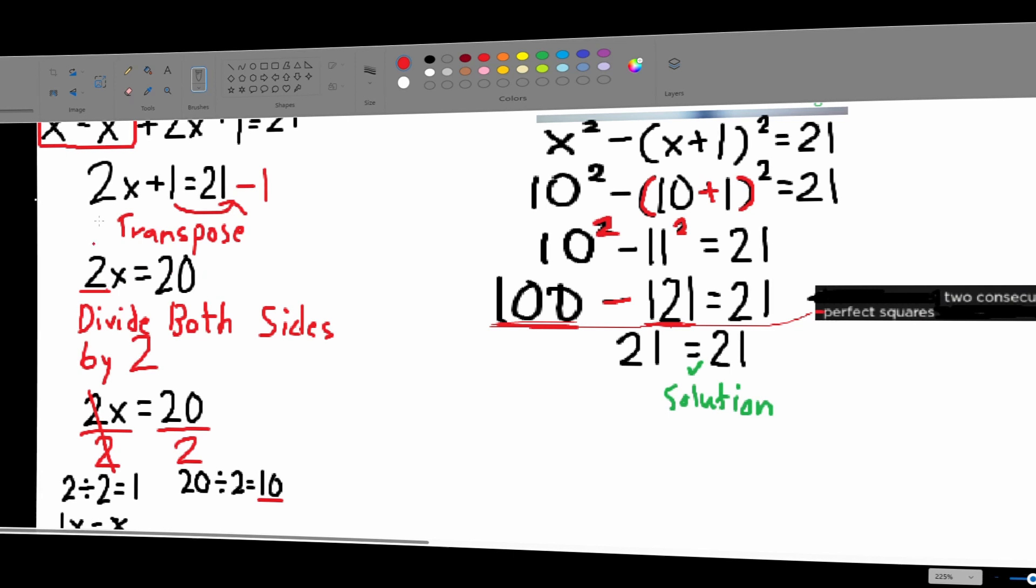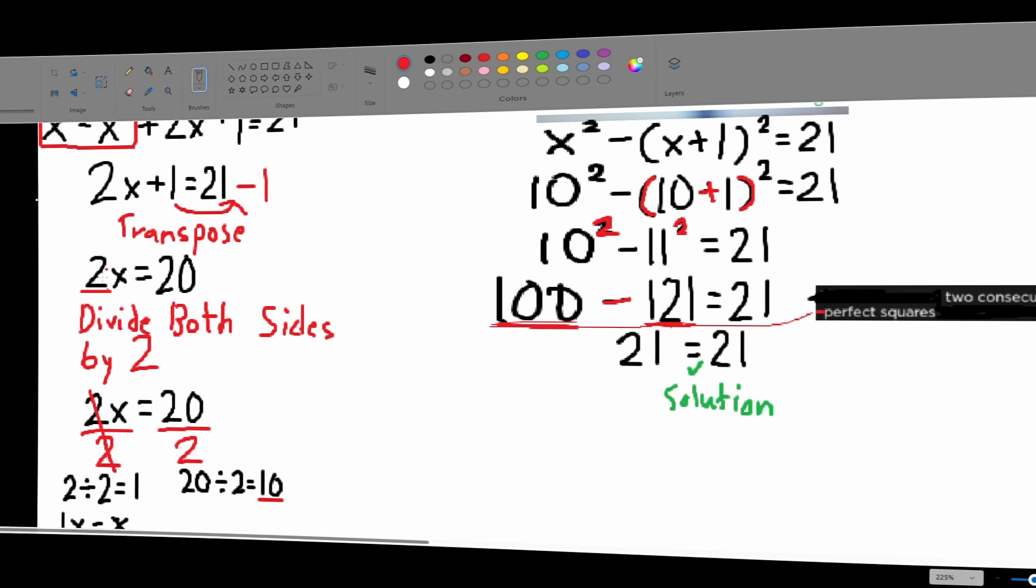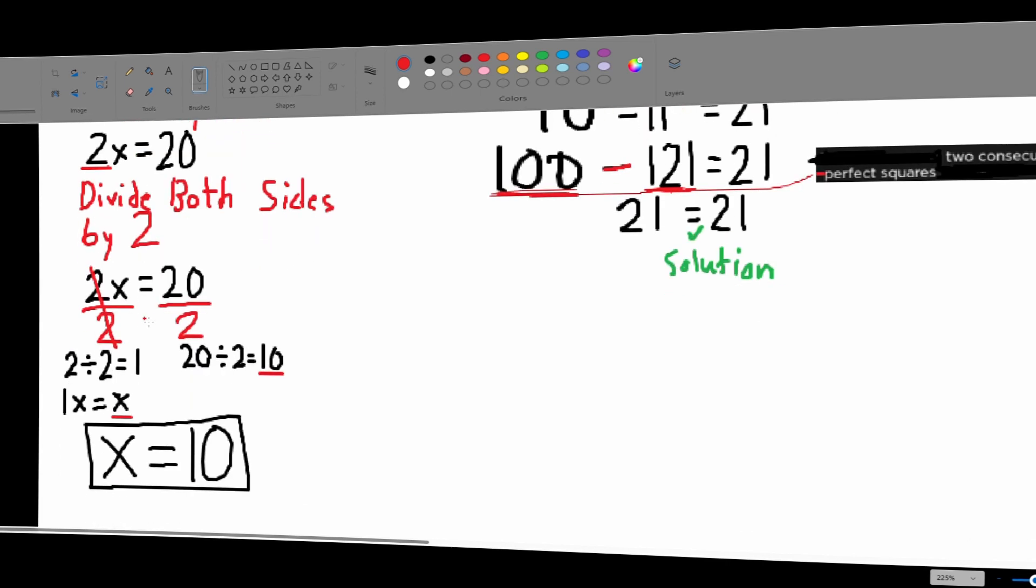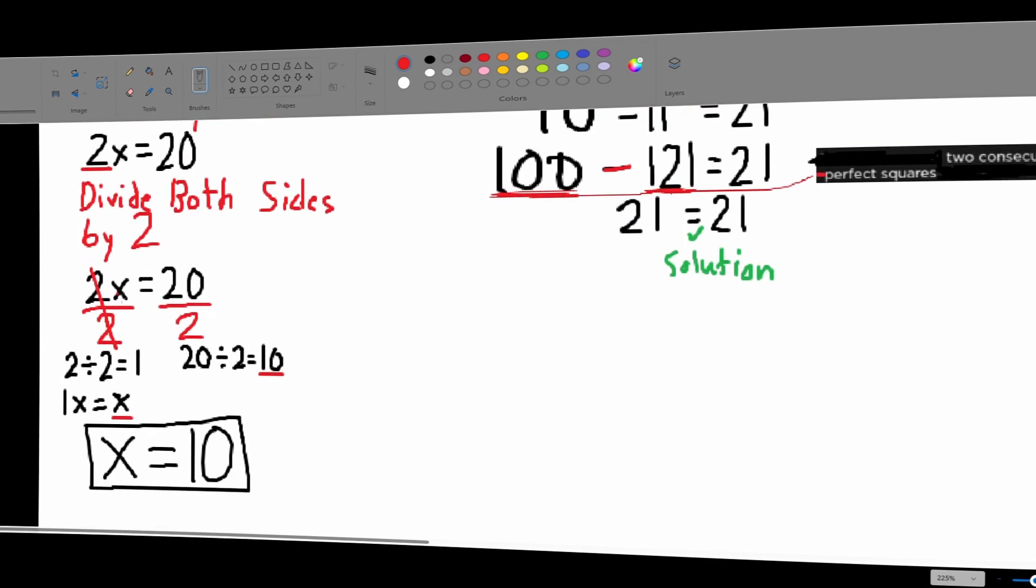2x equals 20. The reason why we divide is because when a number is behind a variable, that's multiplication. So, now if we divide both sides by 2, that's the opposite of multiplication. So, let's do that.